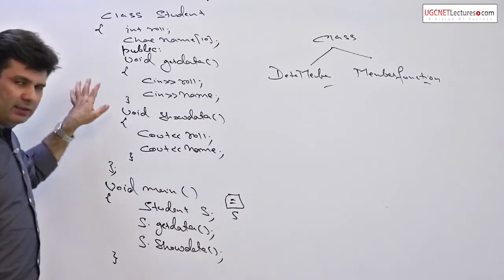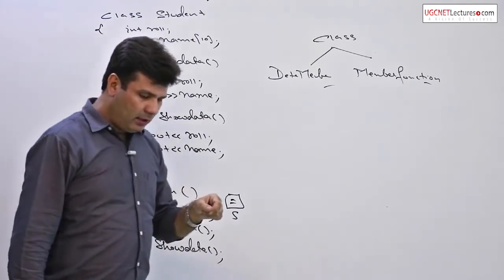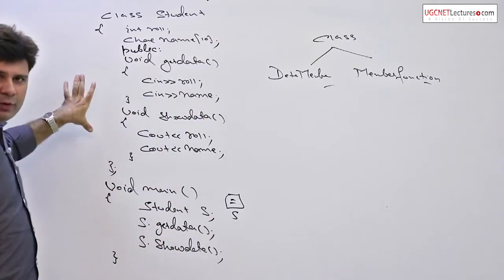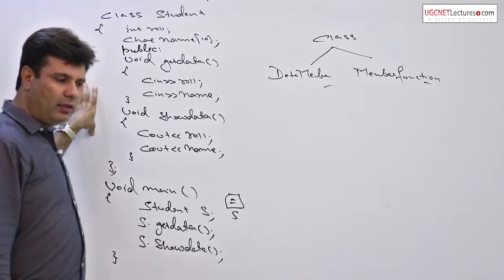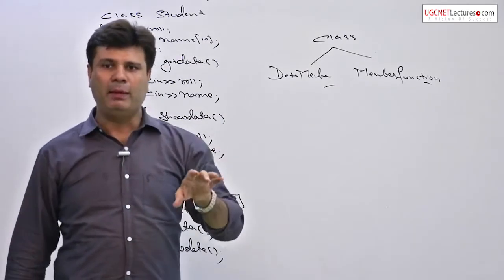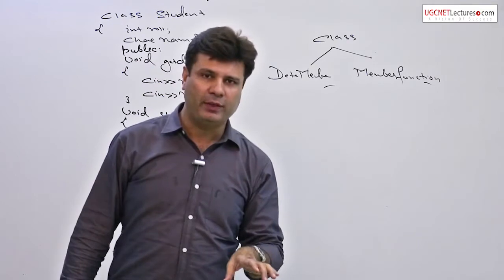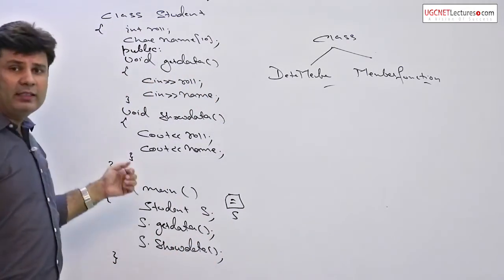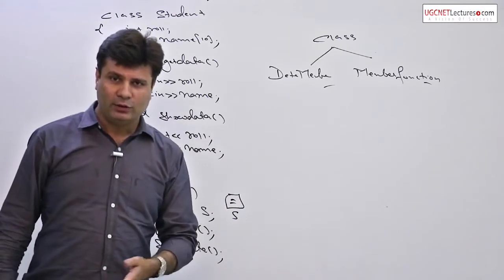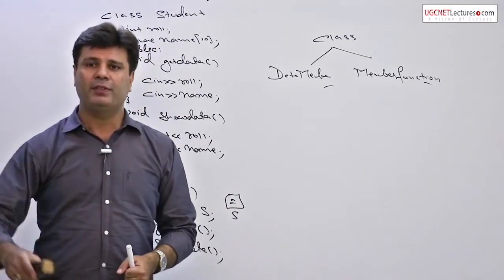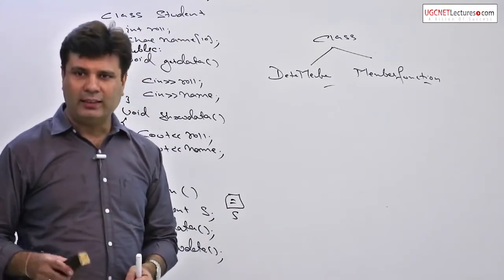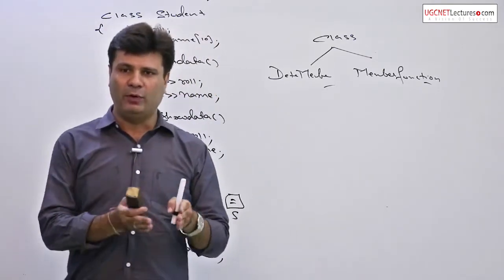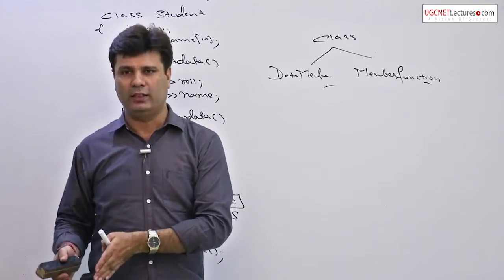Now let us go back to classes and objects. As you see, member functions get data and show data are defined within a class. Member functions can be defined in two different ways: first, within a class, which we just did; and second, outside a class. Let us see how member functions can be defined outside a class, and then we will discuss the difference between the two approaches.